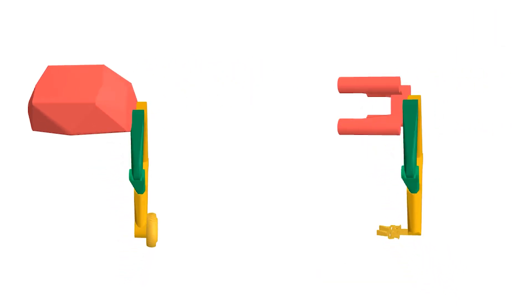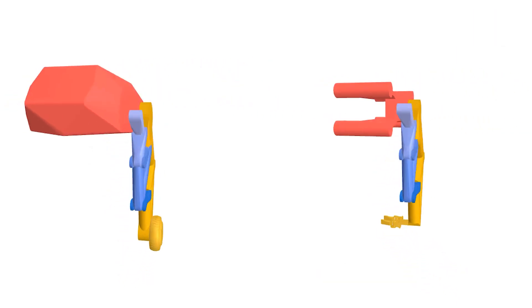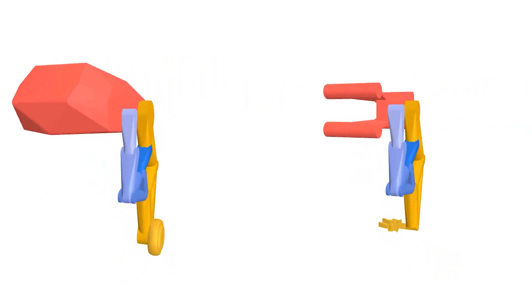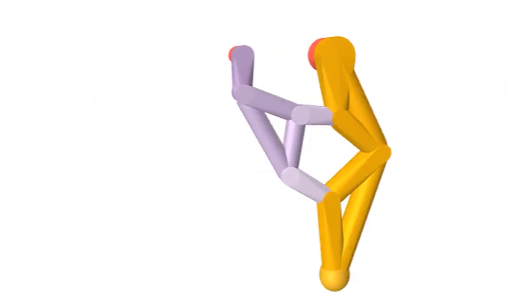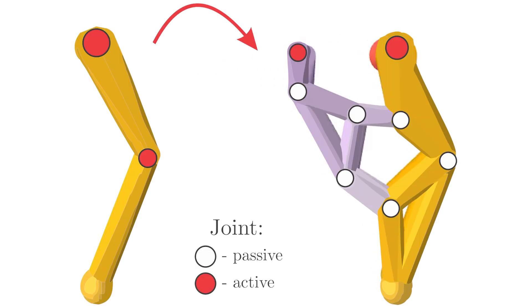We present a framework for optimization of planar linkage mechanisms with closed kinematic loops. The main motivation for transforming from open chain mechanisms to closed loop structures is creating low-inertia robotic limbs by relocating the actuators into the body.